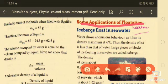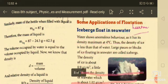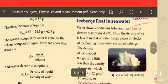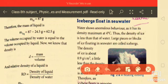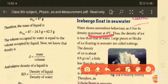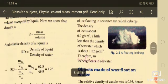You know that icebergs float in seawater. Why? Water shows anomalous behavior as it has its density maximum at 4°C. Thus, the density of ice is less than that of water.